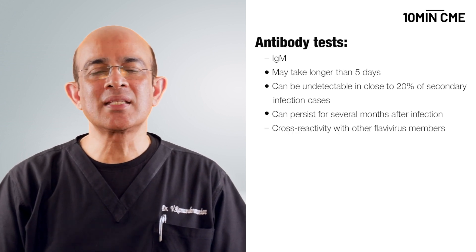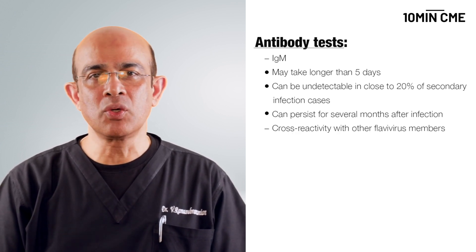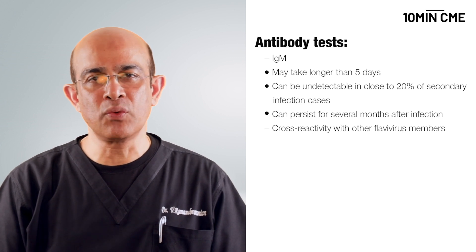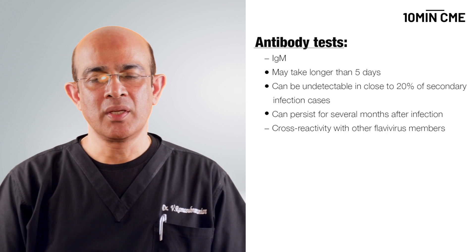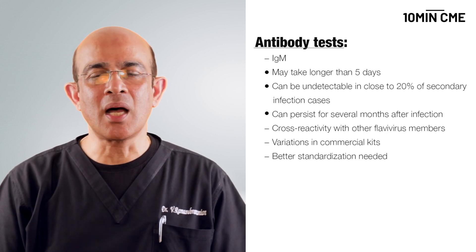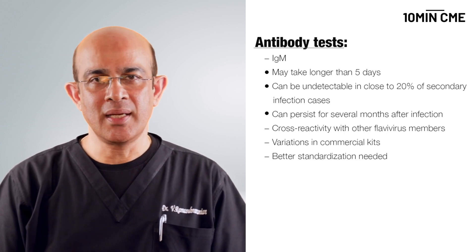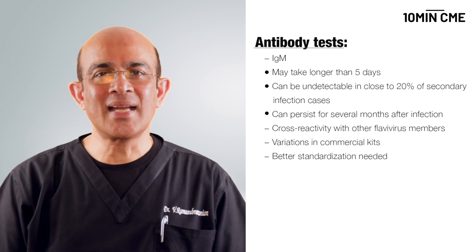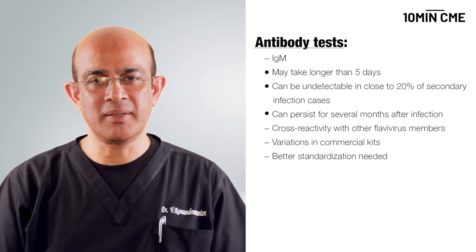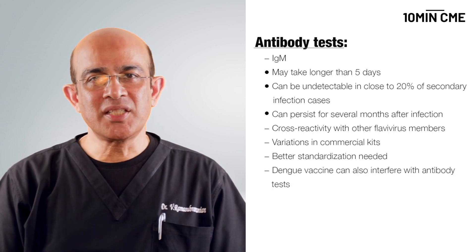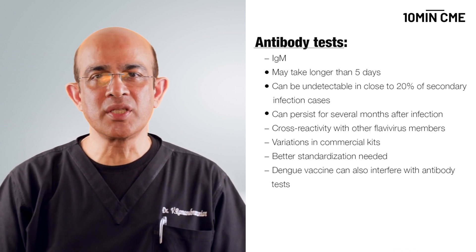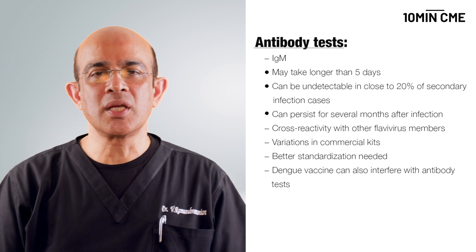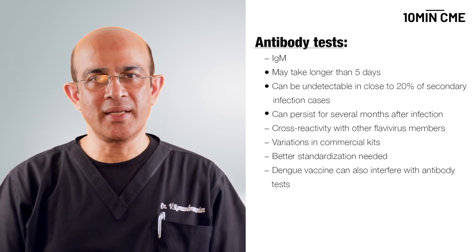Cross-reactivity against other flaviviruses, which may include Japanese encephalitis, yellow fever, and Zika, may occur with antibody tests. There are also variations among commercially available kits in the diagnosis of dengue, and standardization needs to be done better. The vaccination now available for dengue — not yet introduced in India — can also cause a positive serology and may interfere with diagnosis.